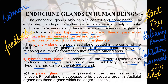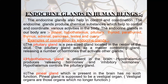The pineal gland, which is present in the brain, has no such known function — that is why it is also known as a vestigial organ. Vestigial organs are those organs which no longer function. Another example of a vestigial organ is the appendix, which also has no known function.